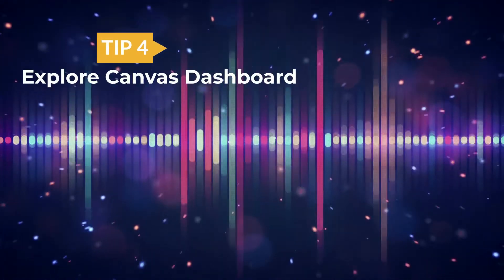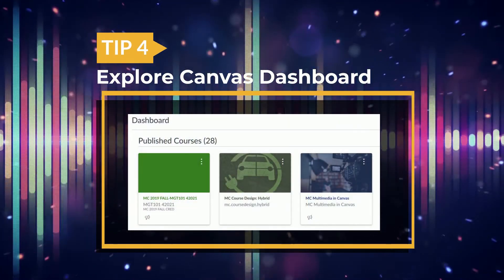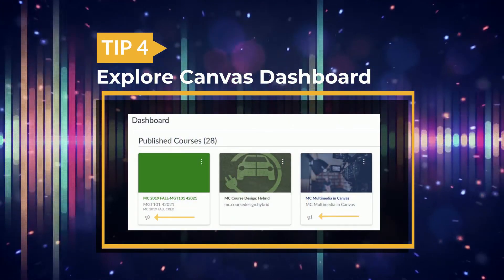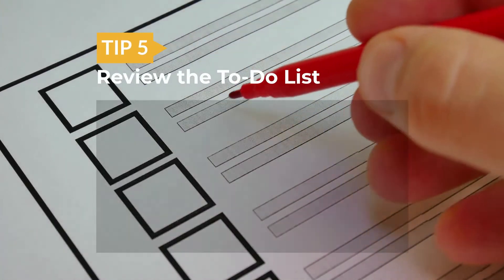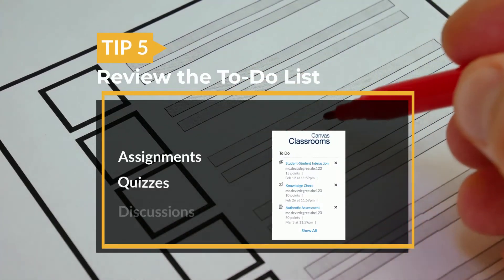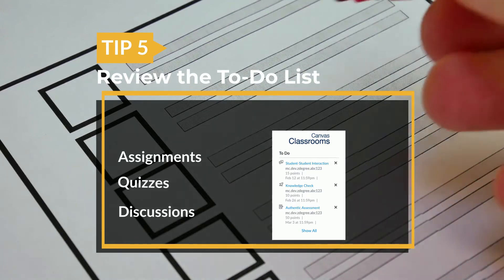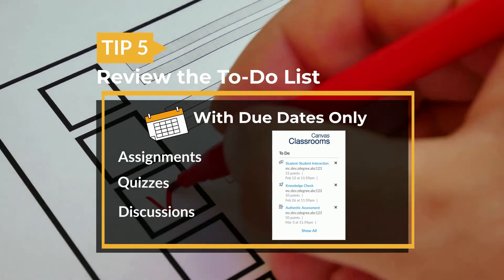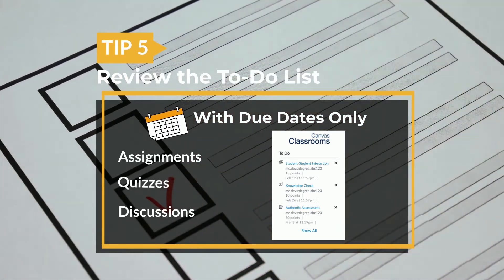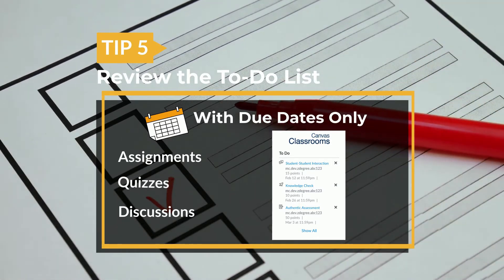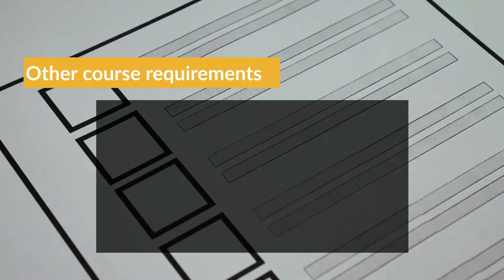4. Explore the dashboard for all your enrolled courses and to see which courses currently have announcements. 5. Review the to-do list for assignments, quizzes, and discussions with the due date. Only the activities with the due date will appear on the to-do list.